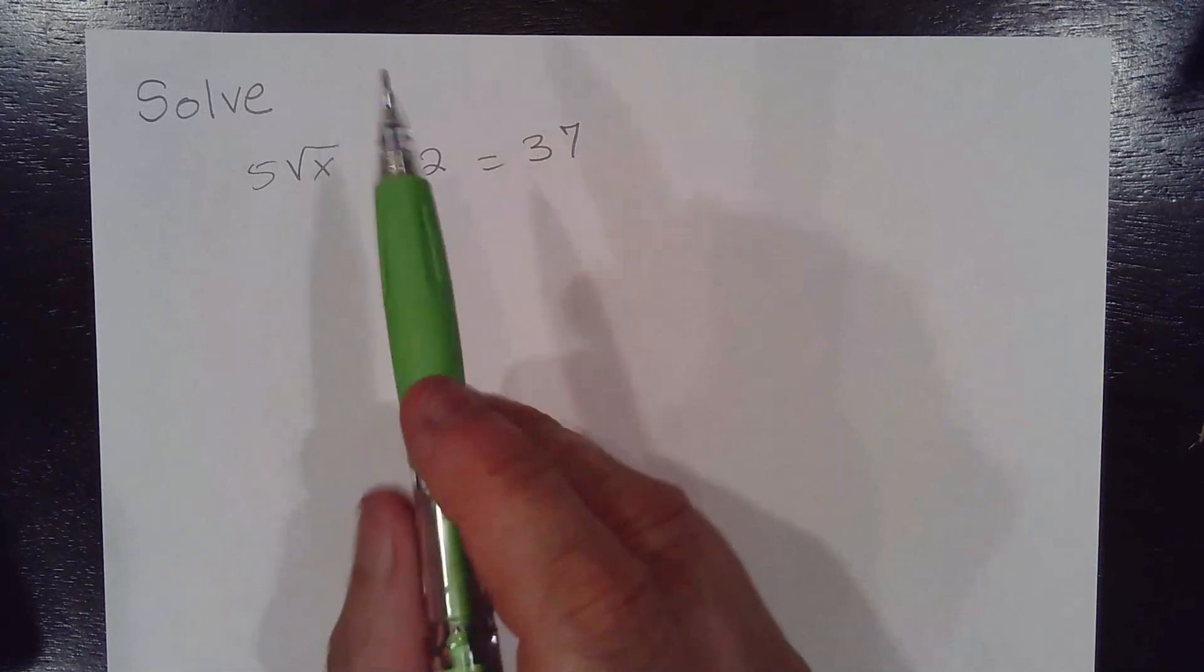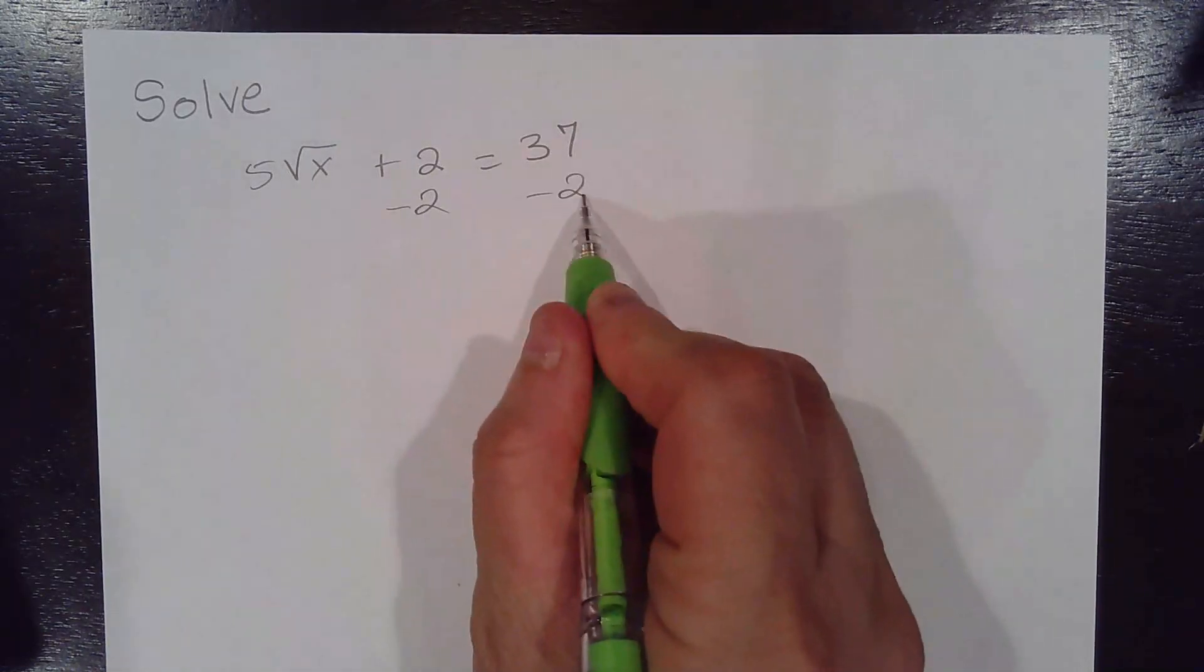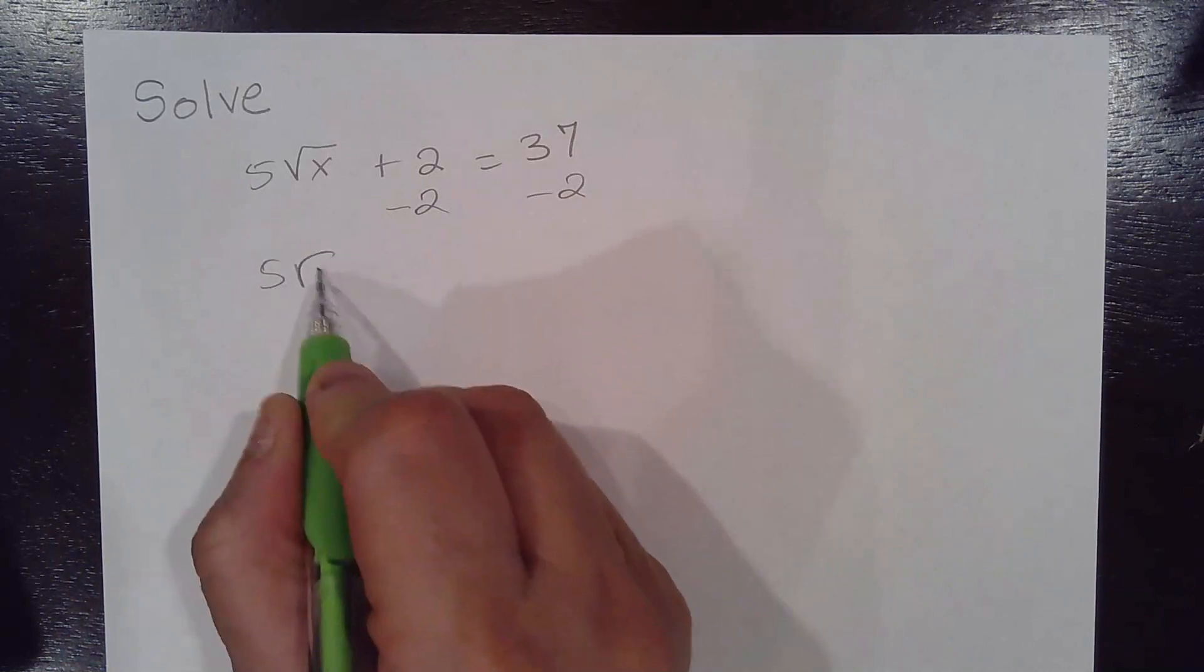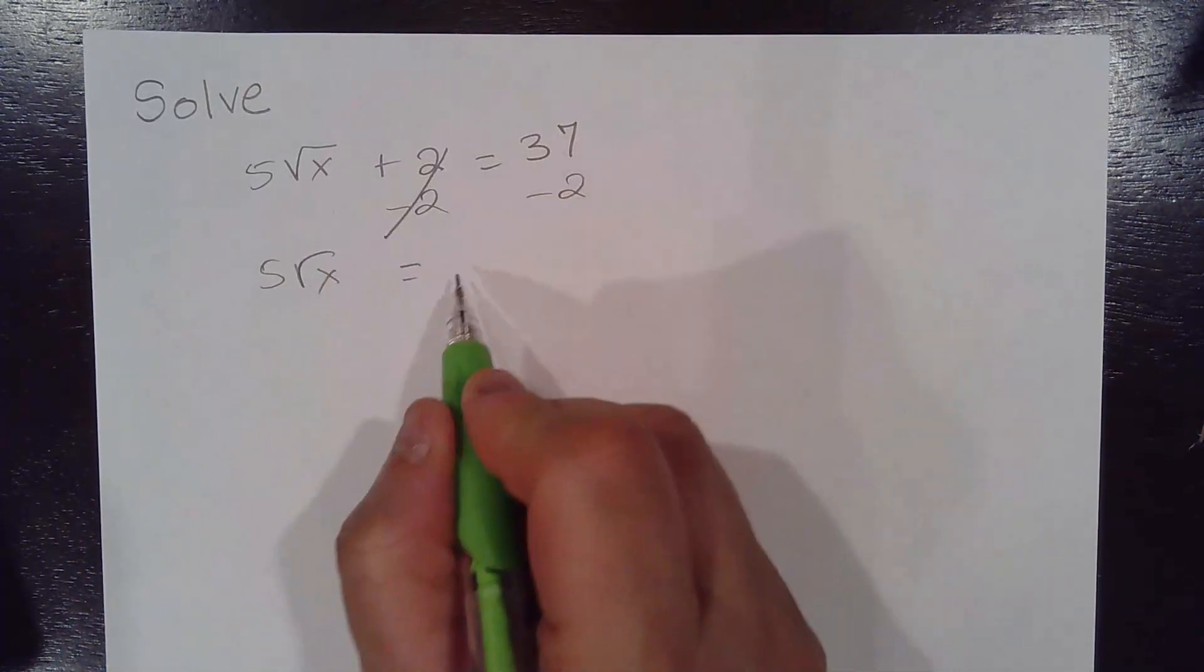So let's go ahead and subtract 2 on both sides of the equation. And if we do that, we get 5 square root of x. This is going to cancel, equal to 37 minus 2 is 35.